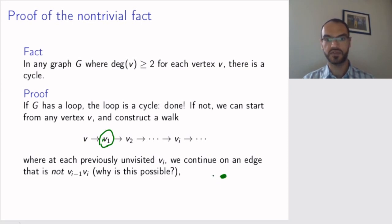Why is this possible? Well, if I have a vertex here, I have never been here before, the degree of the vertex is at least two, so there are at least two edges, and I'm coming in on this edge, I will have at least one edge that I have not visited.